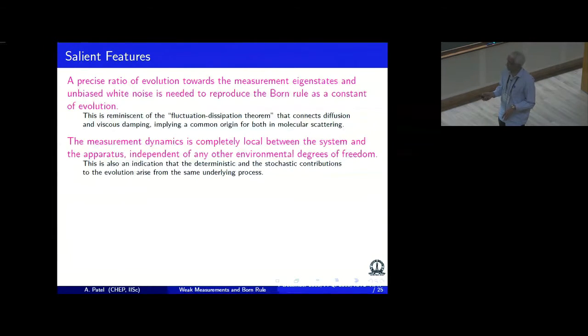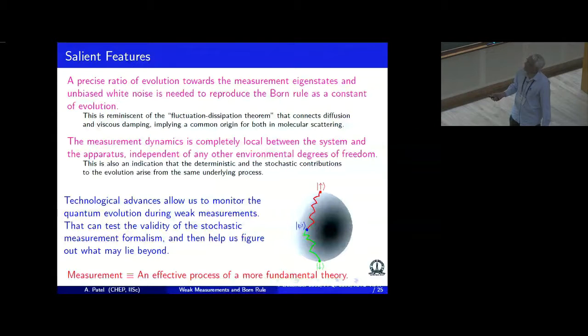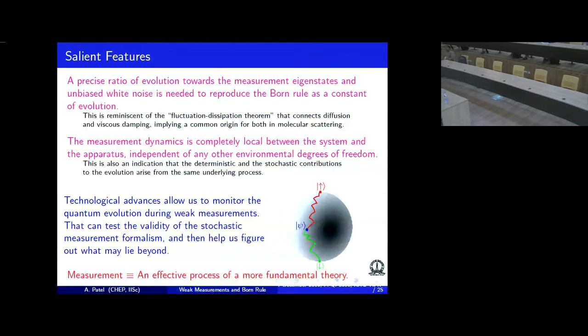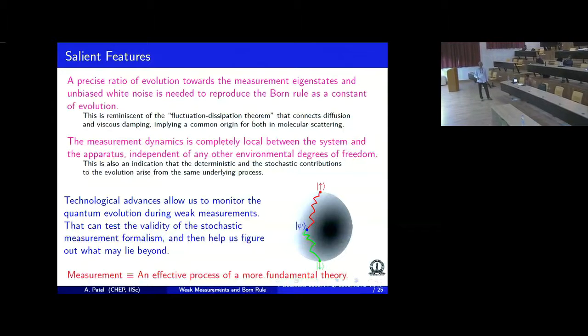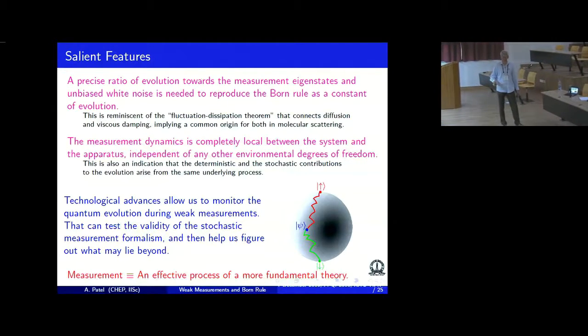These features point towards the important consequence that whatever is happening is between the system and the apparatus. Because dissipation means going towards the eigenstate is subtly dictated by the apparatus and the observable you are measuring. And if the fluctuation is tied to that, then the fluctuation also has to come from the same process. It cannot come from a different process coupling to the environment. So you can forget about other things like gravity or cosmic microwave background radiation. Pictorially it can be depicted by something like this: a state starting going either to one eigenstate or other. The evolution is taking on a surface of a unit sphere, maintains the norm. And finally, the measurement can be considered as an effective process of some fundamental theory which produces these trajectories.